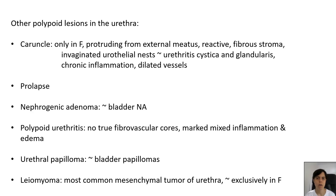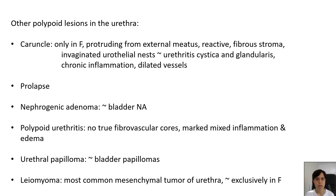There are a number of other lesions which may present as polypoid masses in the urethra. One of them is the caruncle, which exclusively occurs in women and presents as a polypoid mass protruding from the external meatus. It is a reactive lesion consisting of fibrous stroma with invaginated urethral nests resembling urethritis cystica and glandularis, with lots of chronic inflammation, dilated vessels, and edema. Prolapse is another thing to consider, as are nephrogenic adenomas, which although rarely occurring in the urethra, resemble bladder nephrogenic adenomas in this location. Polypoid urethritis is another lesion to consider.